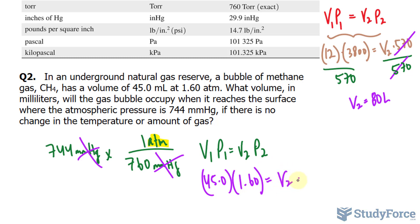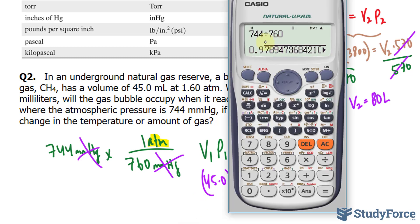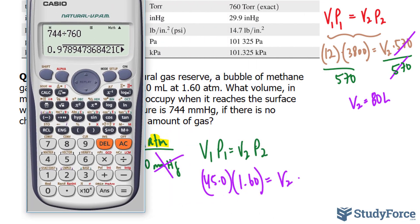The volume is what we're looking for, and the pressure, the new pressure is 0.979, technically. But I'll just keep all of these extra digits so that I don't get into any rounding errors.